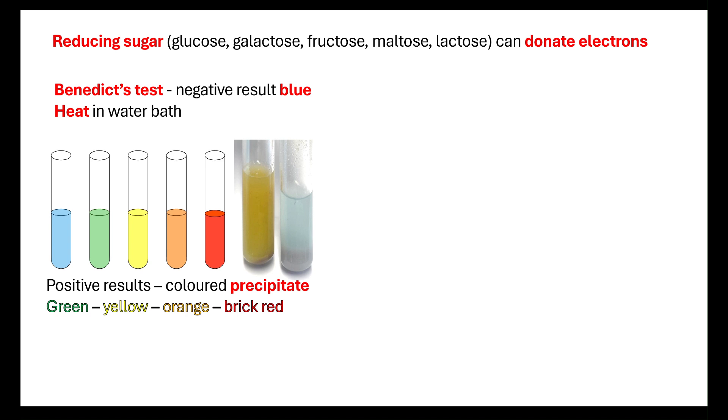The reaction should give us a positive result if reducing sugars are present, giving us the colored precipitate which will go from blue through green, yellow, orange to brick red, showing there is a high concentration. The color change indicates the concentration, and that is qualitative data, the observational skills that we are using.